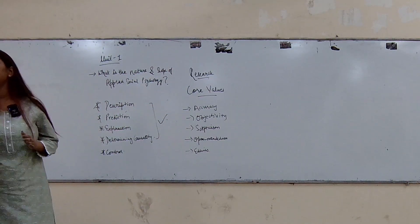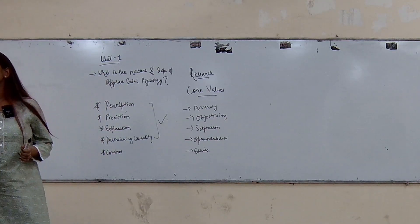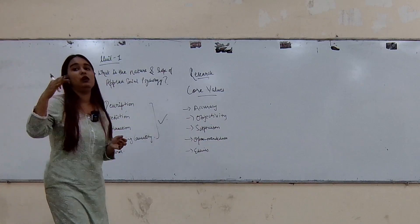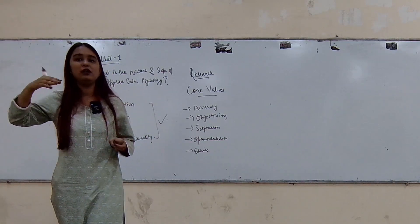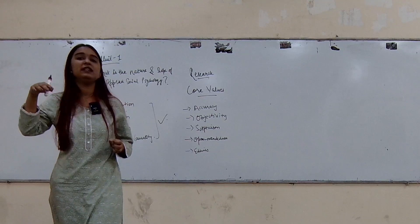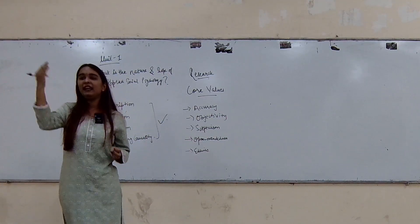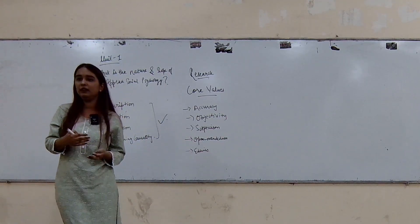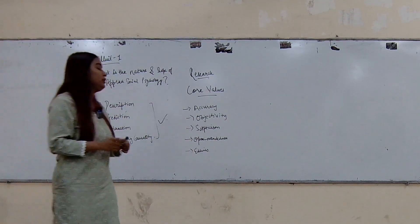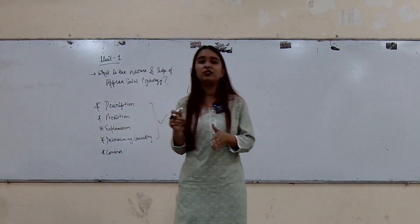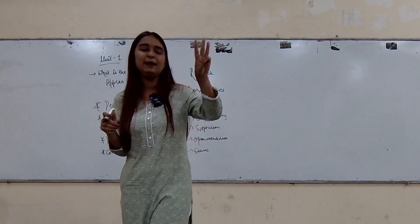Then we have key indicators — local, national, and global indicators. For example, governmental or international organizations release data and rankings. Those are key indicators. Then, interviews. Interviews are of many kinds: structured, semi-structured, and unstructured — three types of interviews.